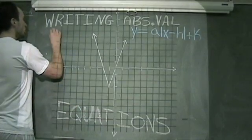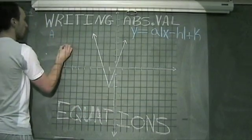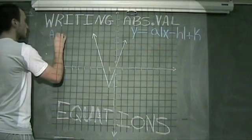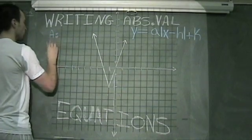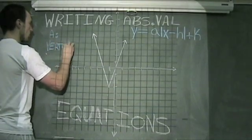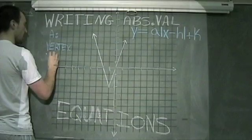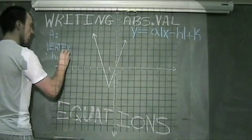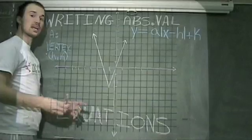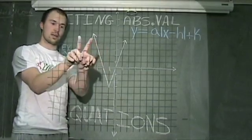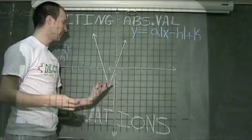So I'm looking for my a value and I'm looking for my vertex. The vertex is h comma k, or it's that corner point, the corner point that we see in the graph.